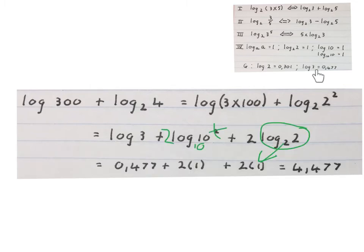Now we've got three loose terms here that we work out separately. The value of log 3 we'll find here and write it in. This 2 will move to the front. We'll have a log base 10 of 10 which is 1 and that log base 2 of 2 is also 1. We simplify and we get 4.477.